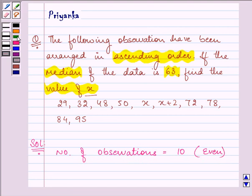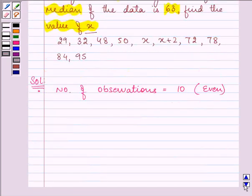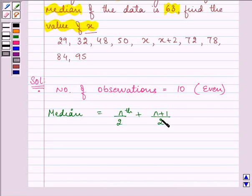Here we will be using the formula to find the median when the number of observations is even. Median equals the (n/2)th observation plus the (n/2 + 1)th observation, the whole divided by 2.